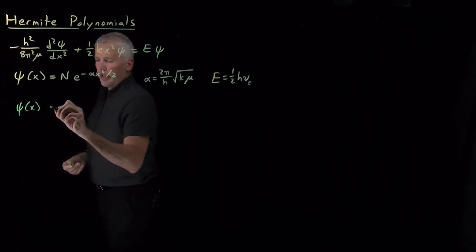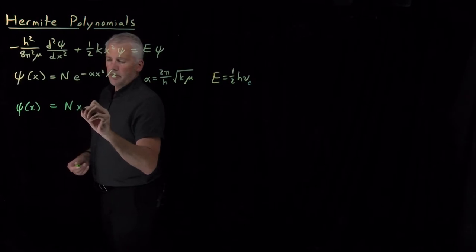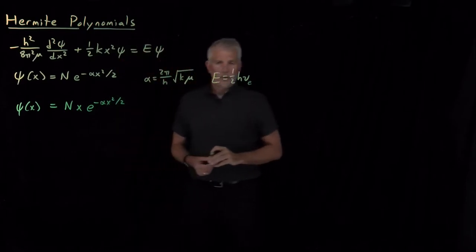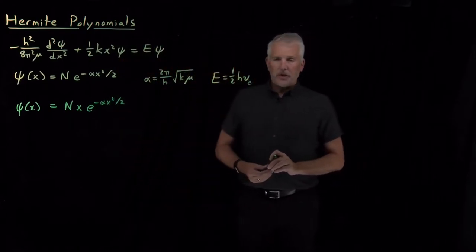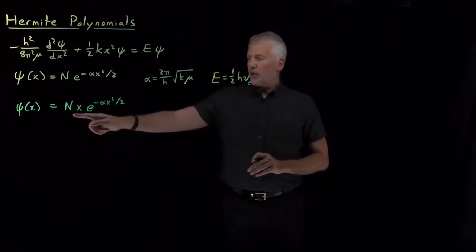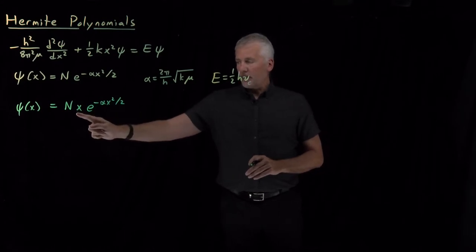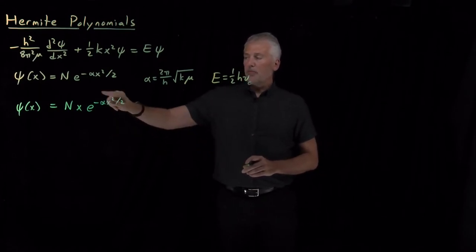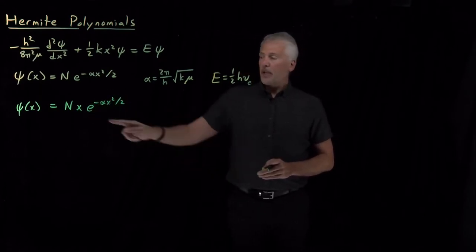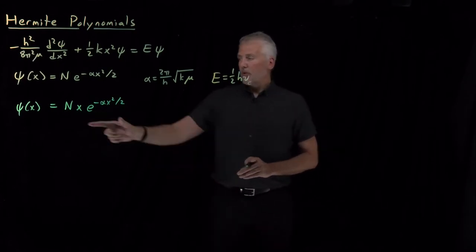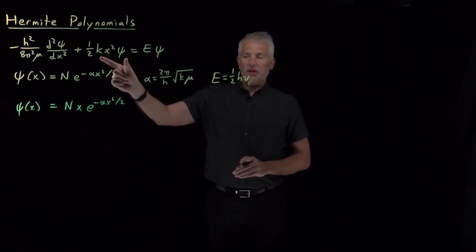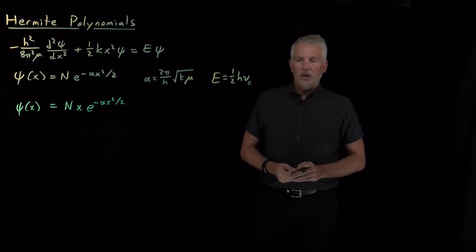For example, a function that looks like N times x times e to the minus alpha x squared over 2 is also a valid solution. We won't do the derivatives here, but you can pause the video and convince yourself: when you take the second derivative, despite the x's out front and in the exponent, you end up with terms that have pulled down two extra powers of x into the polynomial pre-factor. Those can be made to cancel with the two powers of x from the potential energy term, so this is also a valid solution to Schrödinger's equation.